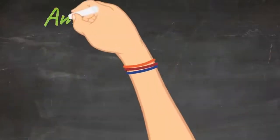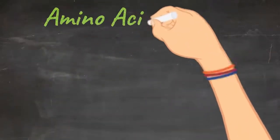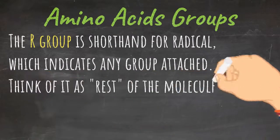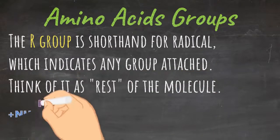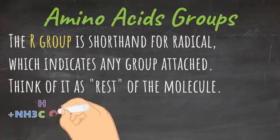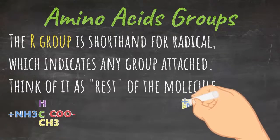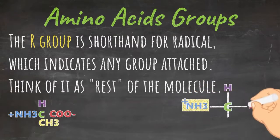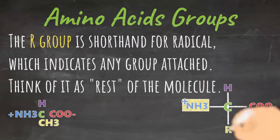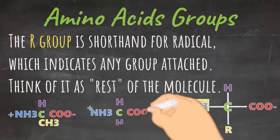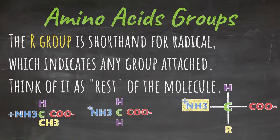The R group is shorthand for radical, which indicates any group attached — think of it as the rest of the molecule. In the bottom left you can see alanine, whose R group is CH3. In the middle is glycine with an R group of H, and on the right there is a general amino acid structure with R representing the rest of the molecule.